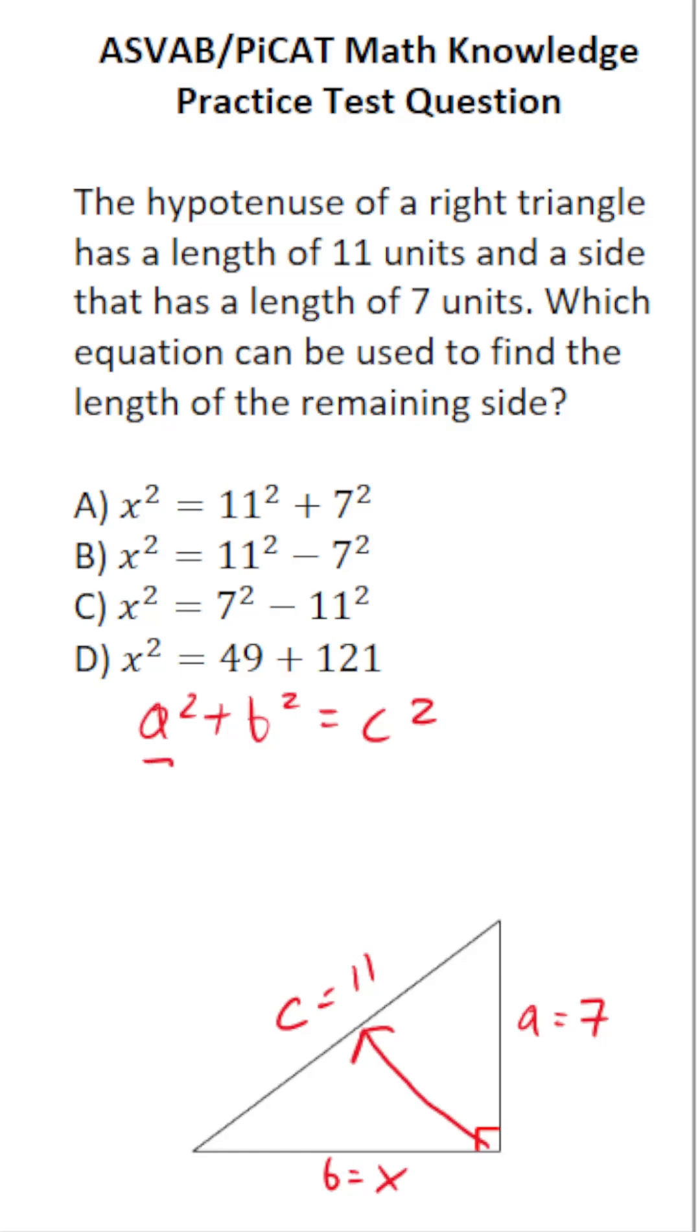a is 7, so this is 7² + x² (since I let b be x since that side length is unknown) = 11² (c is 11).